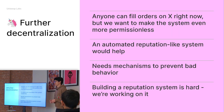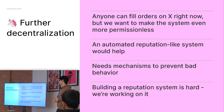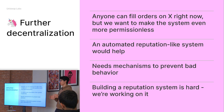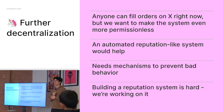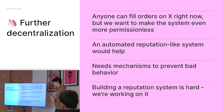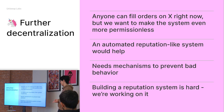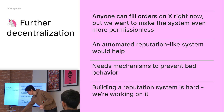Our goal at Uniswap is always to further decentralize things. Right now anybody can fill orders on X — it's a totally open, permissionless market — but we want to make the system even more permissionless. In terms of that RFQ system, something like an automated reputation system would help — a system that punishes bad behavior like sitting on stale quotes, snooping for quotes, or trying to adversely select other people in the space. It's a very hard problem, definitely not new to the space, but stay tuned for that.